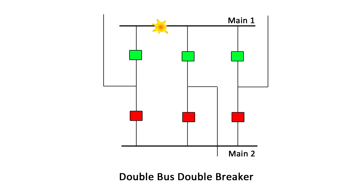Failure of one of the two buses will not interrupt the circuit because all of the circuits can be fed from the remaining bus by isolating the failed bus. Load balancing between buses can be achieved by shifting circuits from one bus to the other.